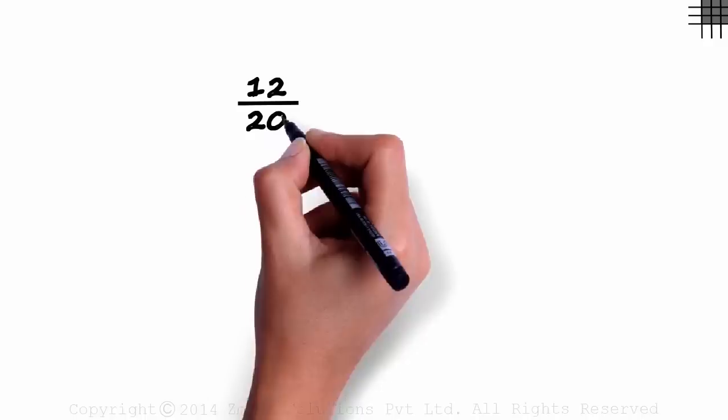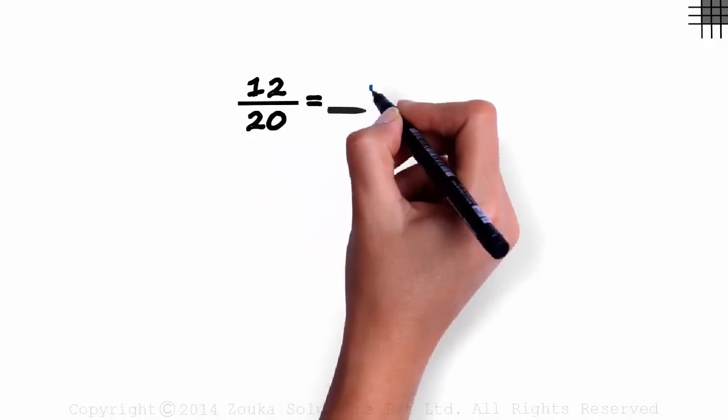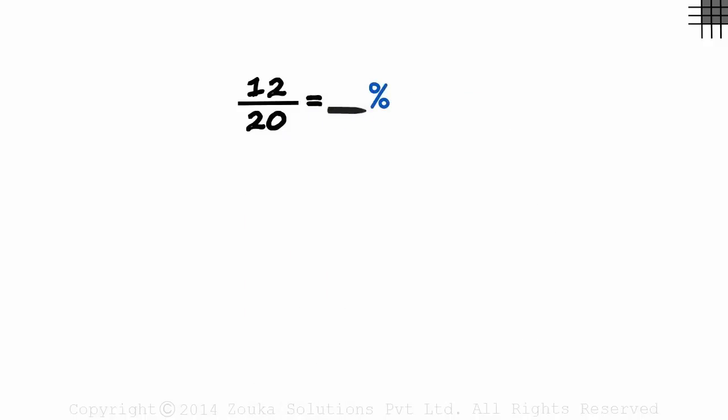Say we have a decimal fraction like 12 over 20. What percentage is this? What if I tell you to convert this to percent form, all you really need to do is multiply the decimal fraction by 100.